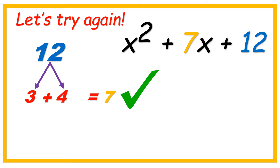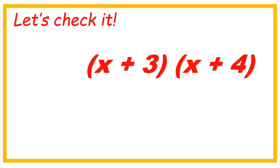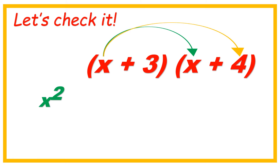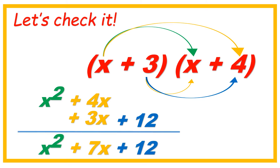You got it! The factors are x plus 3 and x plus 4. We got it! Let's check it. x plus 3, x plus 4 — let's do the FOIL method. x squared plus 7x plus 12. Just like that.